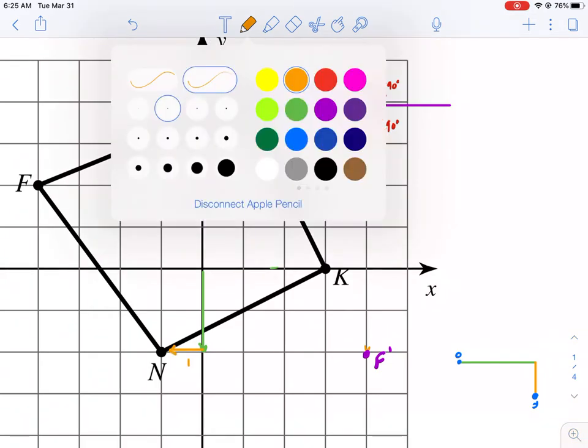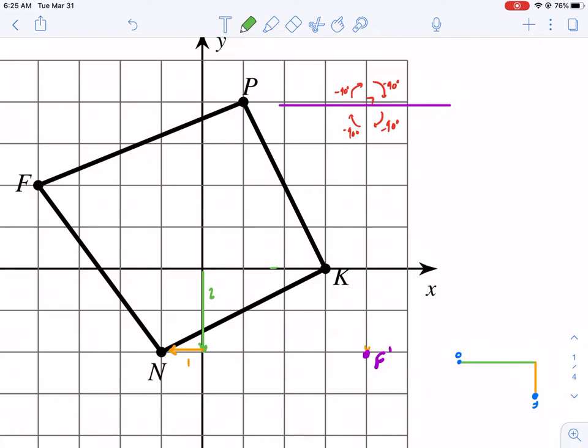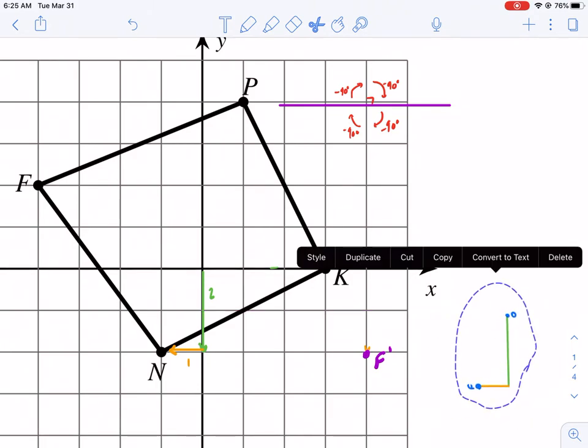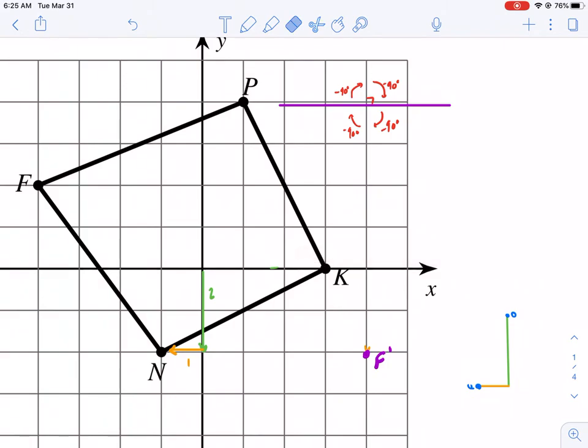That's one unit to the left, this is two units down. Now what happens if I rotate this guy 180 degrees? Well let's use this one as an example. So imagine this is point N. Actually let me just change it to point N. That's still my origin. Here's point N.